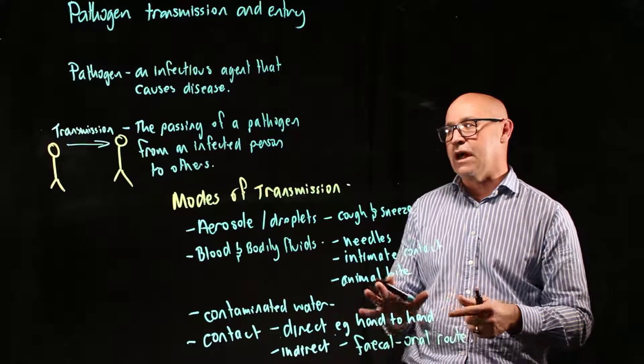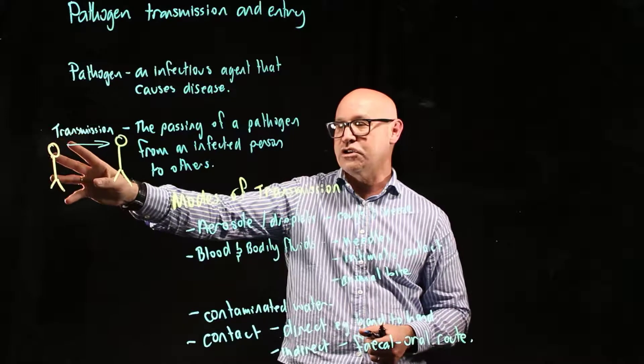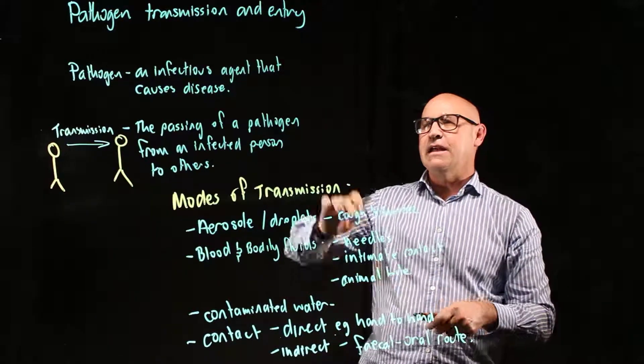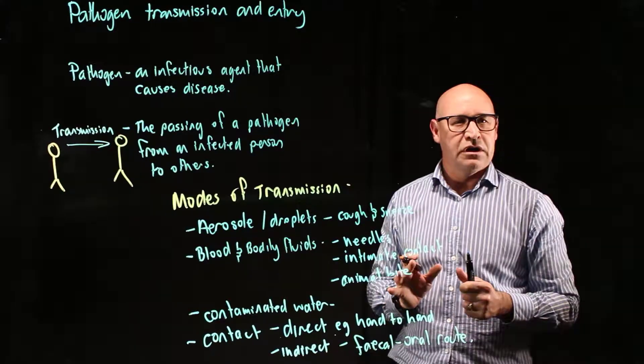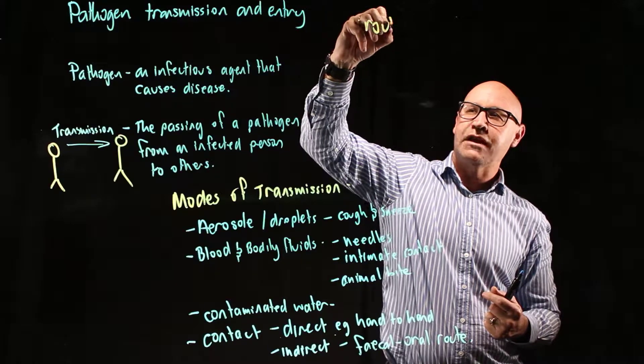So those are the different ways in which an infectious agent can travel from a person who's got the infection to another person. The next thing we need to talk about is the ways in which the pathogen can actually get into the body - the routes of entry.